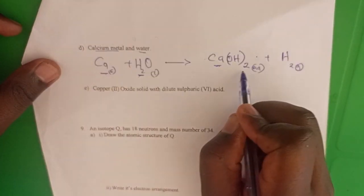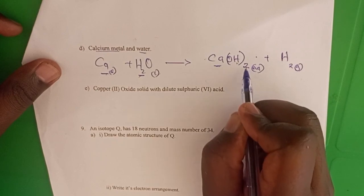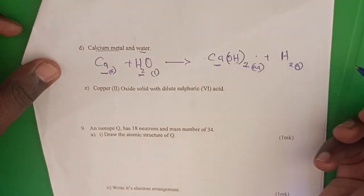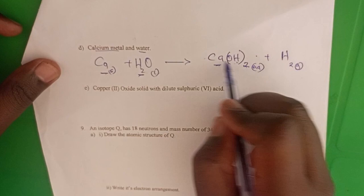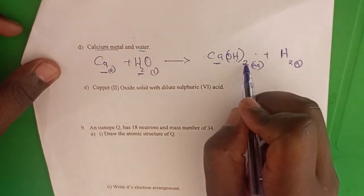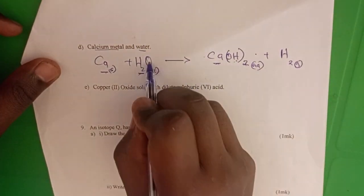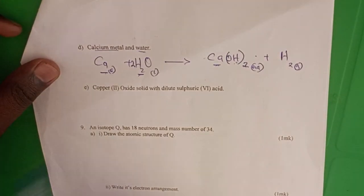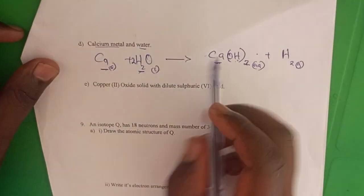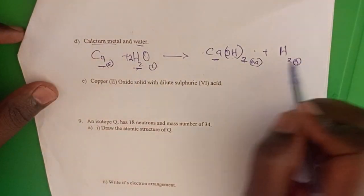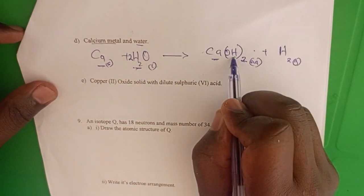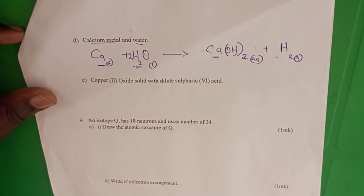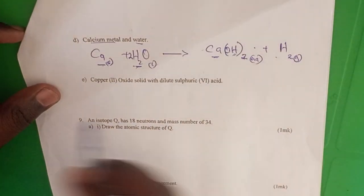Balancing: calcium and hydrogen — the hydroxide gives two hydrogen, that is four hydrogens total. Balancing oxygens: we have two oxygens on the right and one on the left, so we put a two in front of water. Going back to hydrogen: four hydrogens on the reactant side and four on the product side. The equation is balanced.